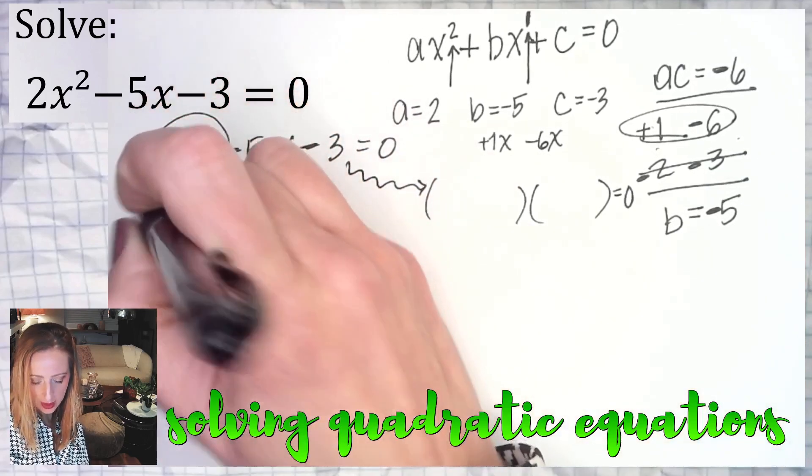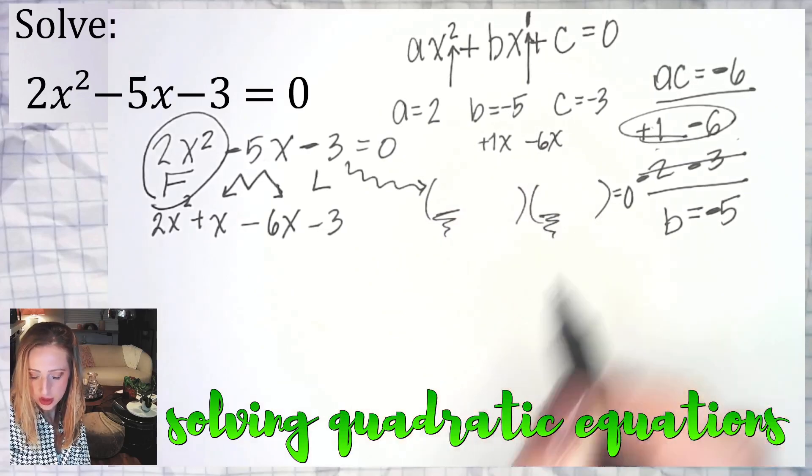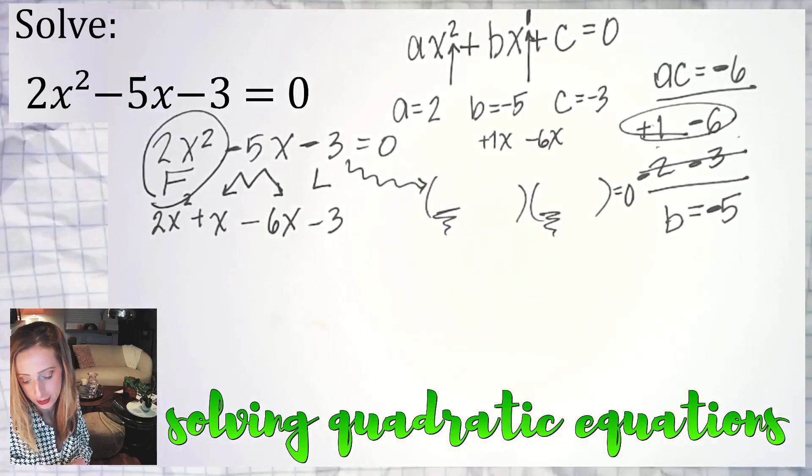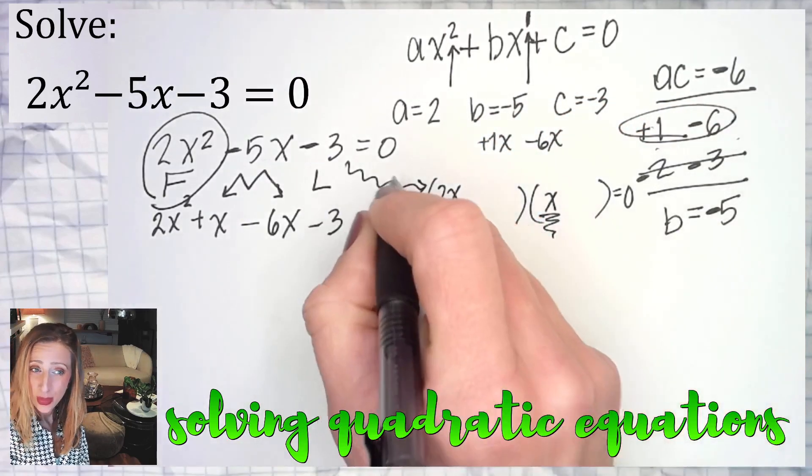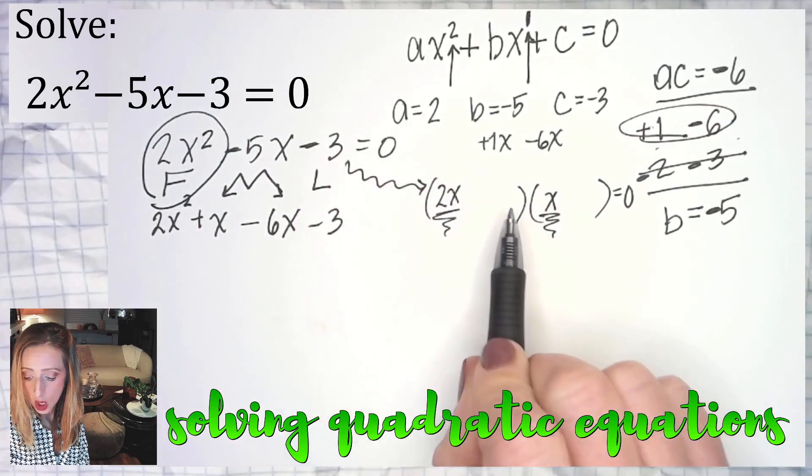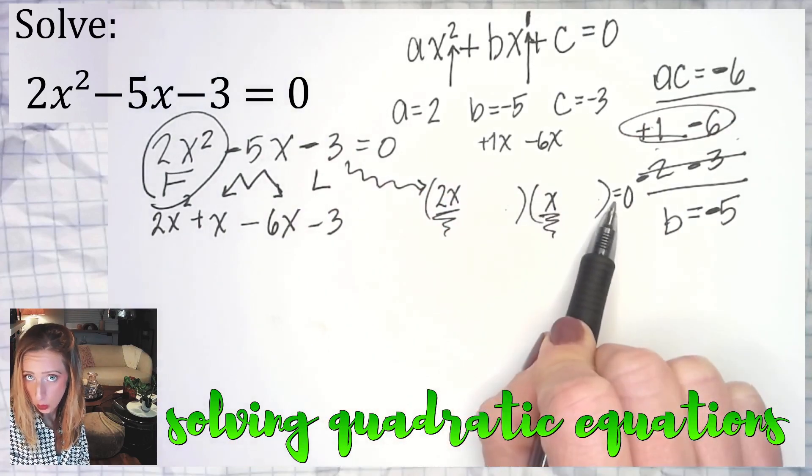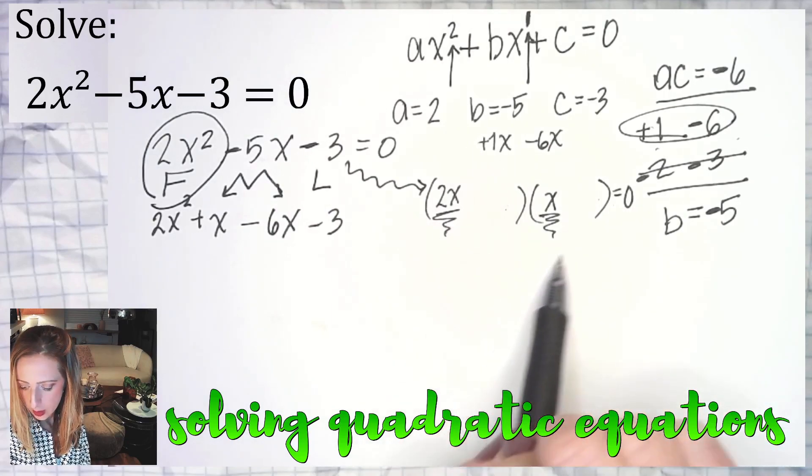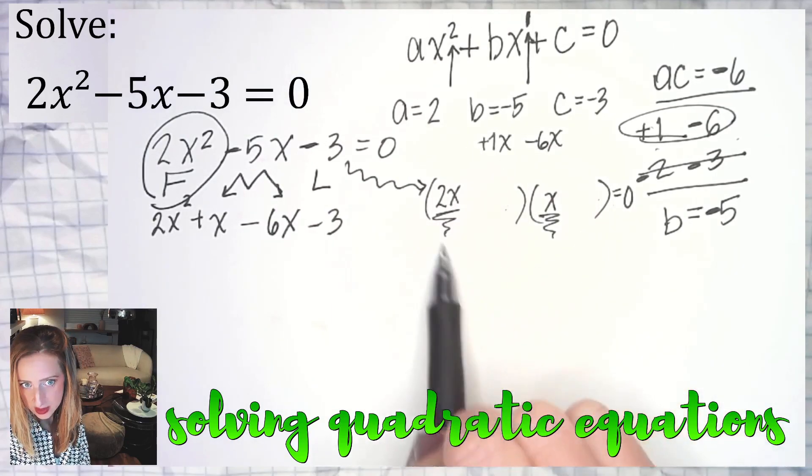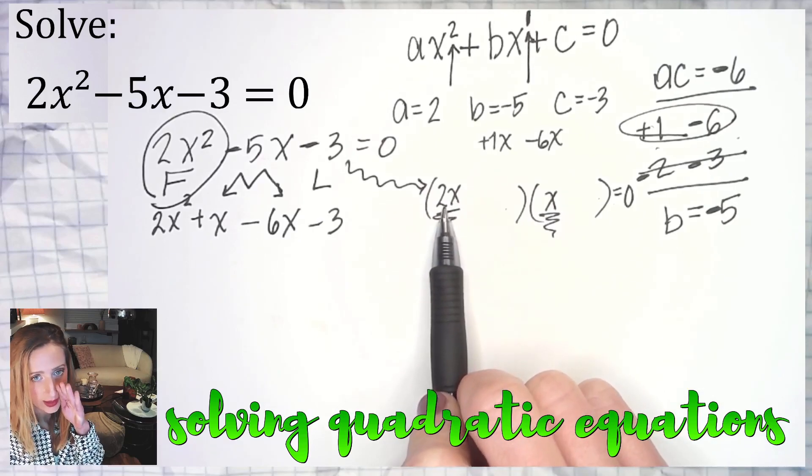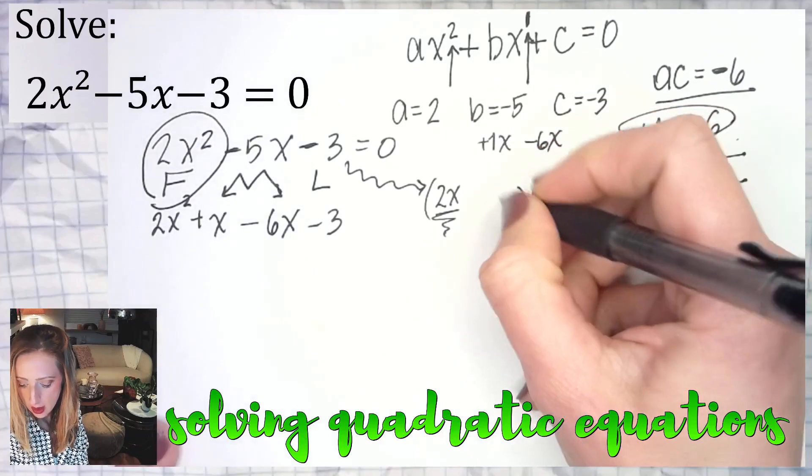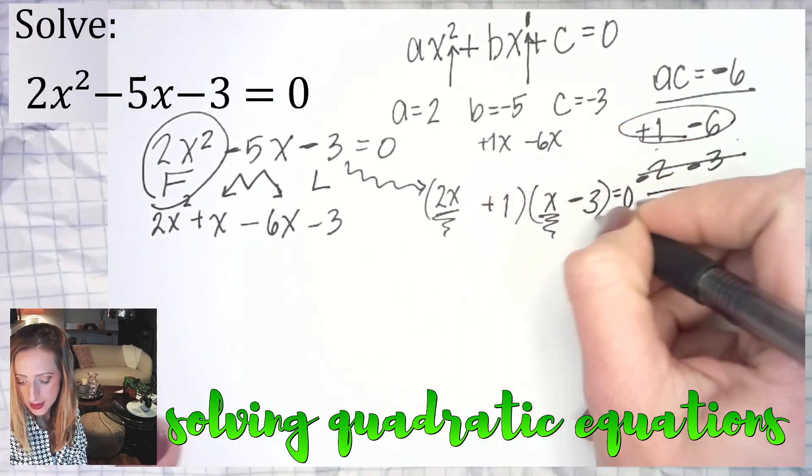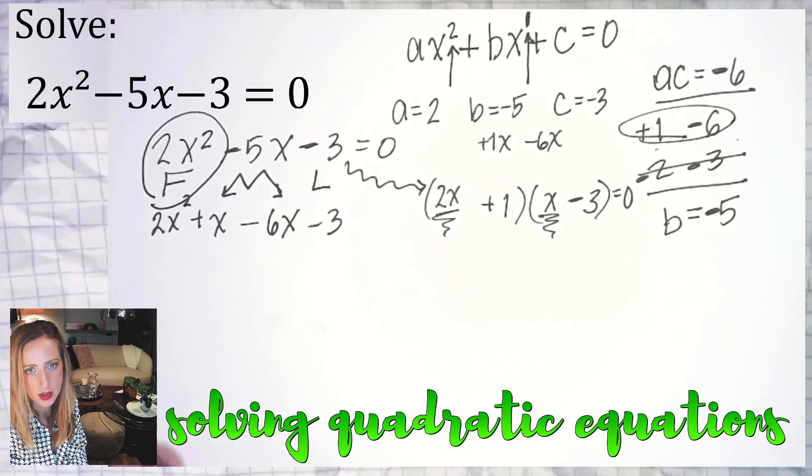First times first is 2x squared. First times first needs to give me 2x squared. Two is prime. Don't have a lot of options, ladies and gentlemen. 2x and x it is. Three is also prime. So that means I would either have one and three or three and one. Now, one of them is going to give me 1x. The other is negative 6x. This already has a two. It's not going to give me 1x. It can give me 6x if I multiply negative six. So I'll make that negative three. And if that's positive 1x, that's plus one or last times last is negative three.